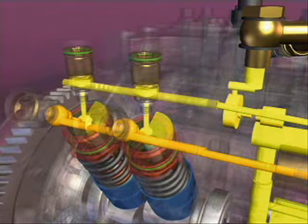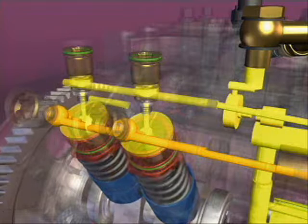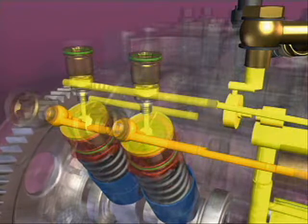Fuel that leaks past the barrel and plunger is collected in a drilling in the pump head and routed to the air bleed circuit for return to the fuel tank.